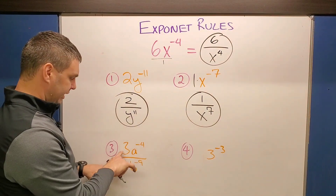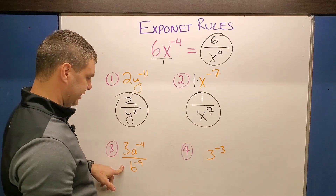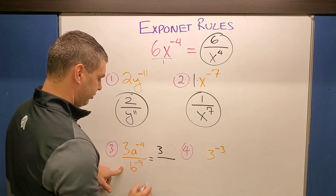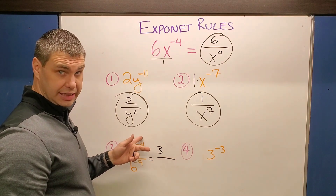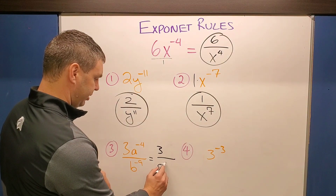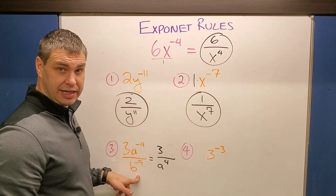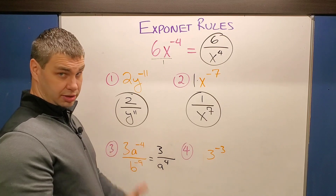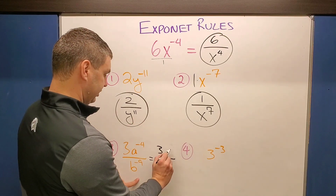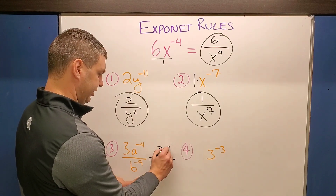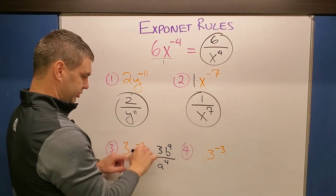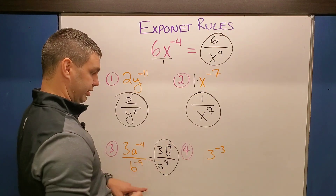Number three has a three that's not being affected by either of the negative exponents, so it's going to stay on top of the fraction bar. The a to the negative four is a negative exponent, so it goes to the bottom and becomes positive a to the fourth. And b to the negative nine — this also works if you start in the denominator, you can flip it to the numerator. It flips to the top and becomes a positive nine. So the final answer has the three on top with a to the fourth and b to the ninth arranged accordingly.